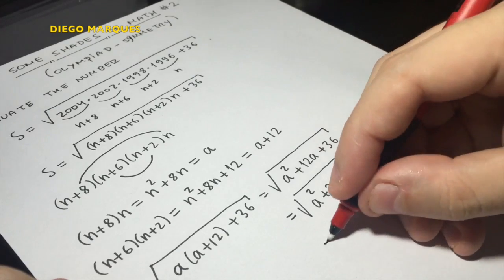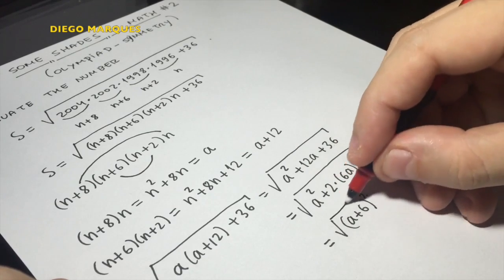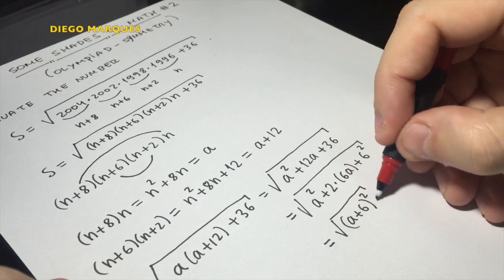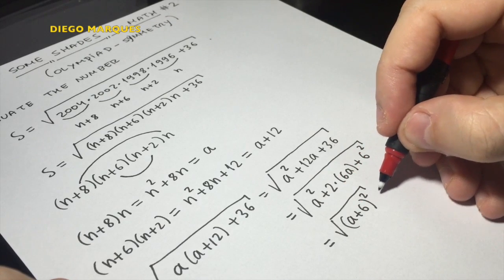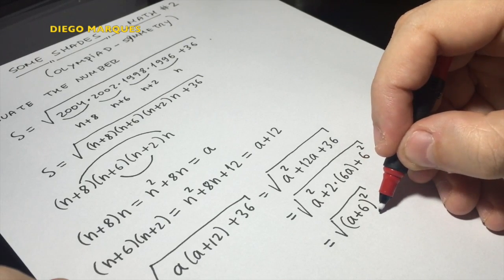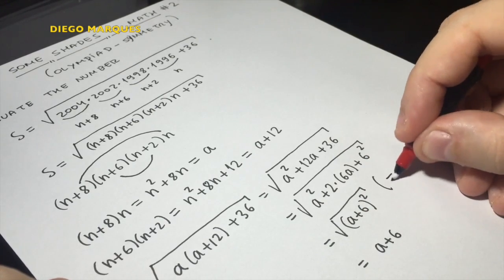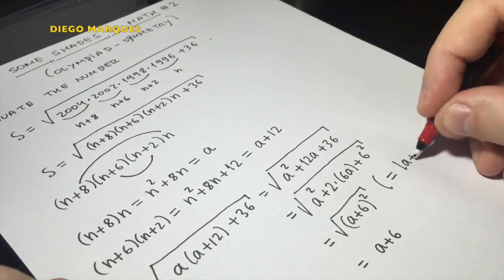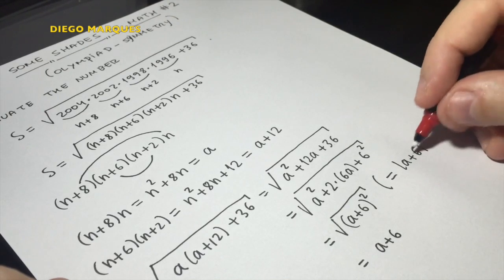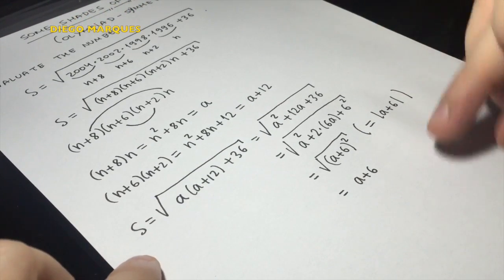So this number is actually a plus 6 square. Since a is positive, the square root of a perfect square is the modulus, the absolute value of the number. But here, a plus 6 is a positive number. So this is equal to a plus 6. This should be equal to the absolute value of a plus 6, but a plus 6 is positive. So s is equal to a plus 6.